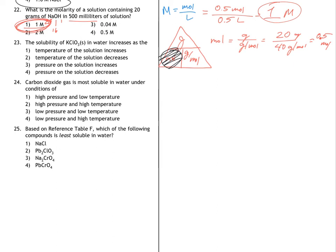23. Good. There's no math. It says the solubility of KClO3, which is a solid in water, increases as the temperature of the solution increases. So you just need to know that solubility for a solid increases as temperature increases.